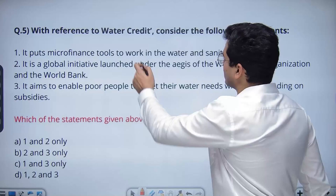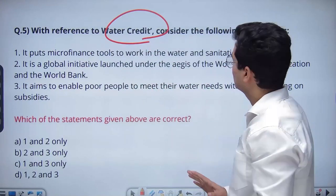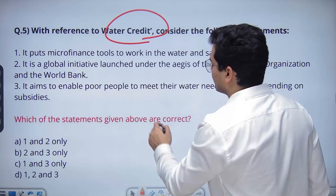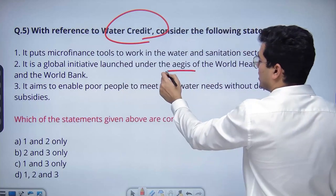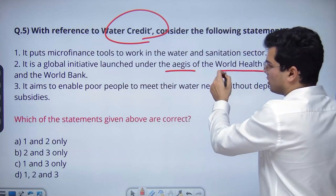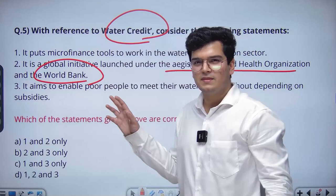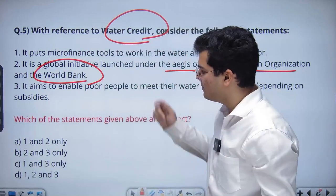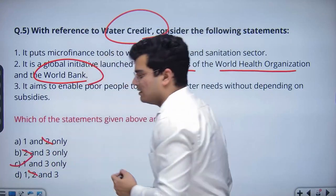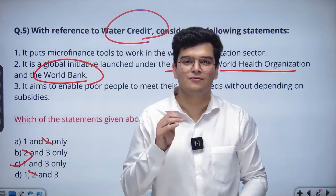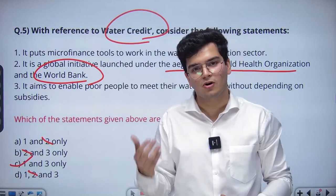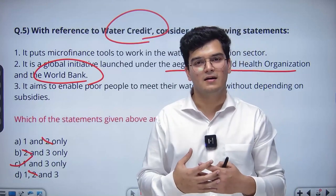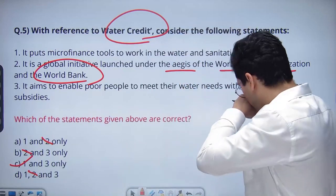With reference to water credit, consider the following statements. I had never heard of water credit when I solved this question but I got it right. Read the second statement: It is a global initiative launched under the aegis of World Health Organization and World Bank. These two organizations working together does sound a little odd. If you eliminate option two, you'll get the answer which is C. The lesson is: use your mind as well. Not all questions are done only from your formal background knowledge. A lot of them are done through application knowledge.